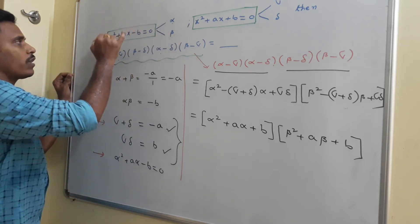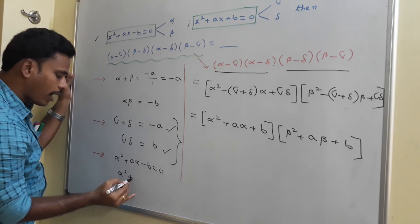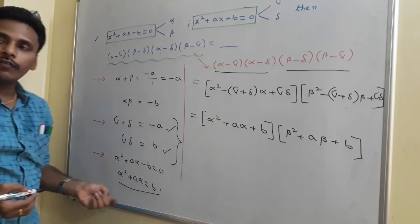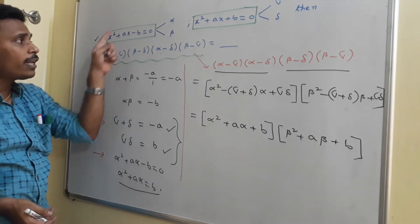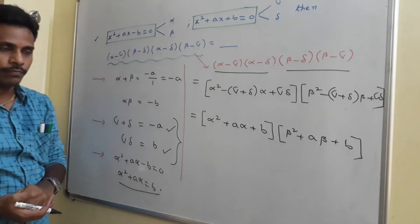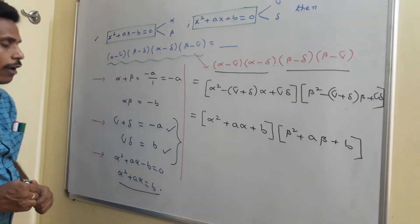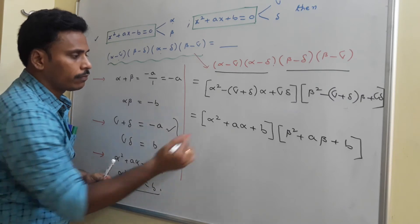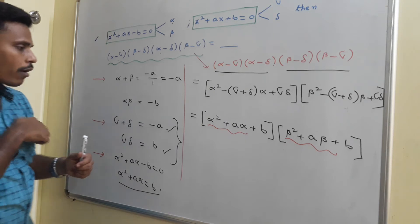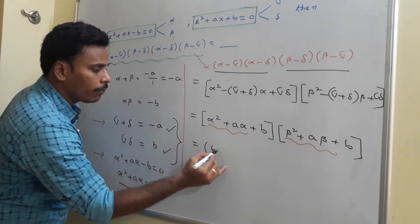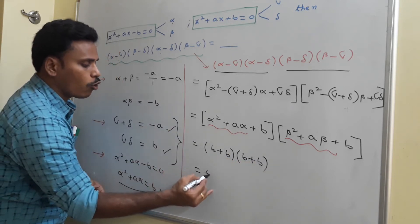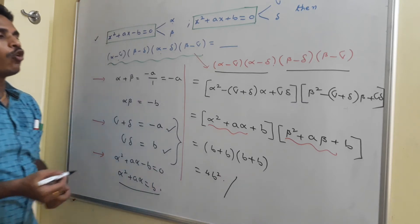Replacing alpha² plus a·alpha with b and beta² plus a·beta with b in the two brackets, we get (b plus b)(b plus b) = 2b times 2b = 4b². The answer for this problem is 4b².